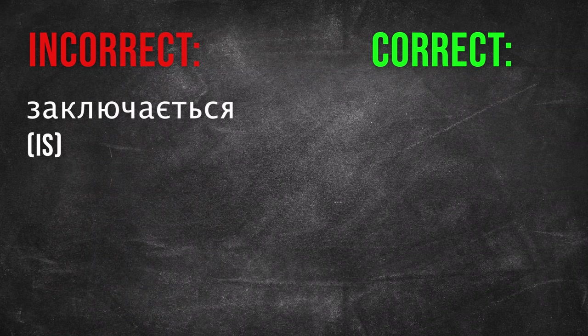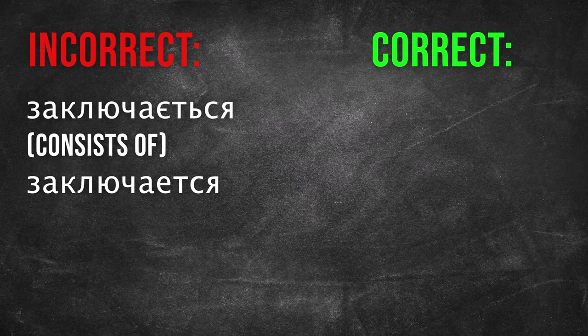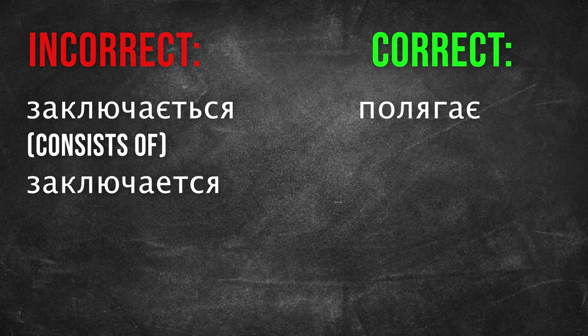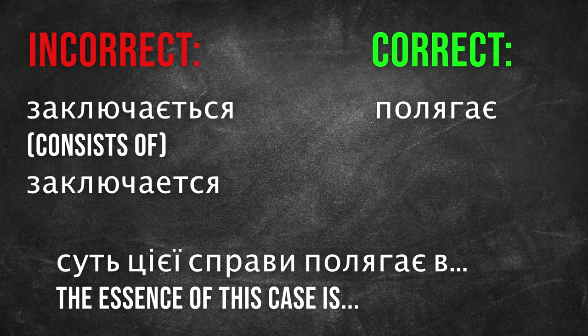Another example of Russianism: «Заключається». In Russian it sounds like «Заключается» — «Суть этого дела заключается в...». In Ukrainian we must say «Полягає» — «Суть цієї справи полягає в...»